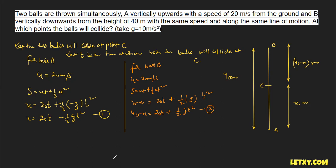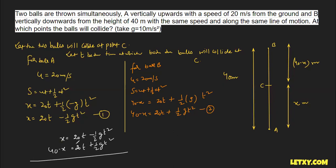Now we solve both equations by adding them. Equation 1: x = 20t − ½gt². Equation 2: 40 − x = 20t + ½gt². Adding them: the x terms cancel and the ½gt² terms cancel, giving 40 = 40t. Therefore t = 1 second — both balls collide after one second.